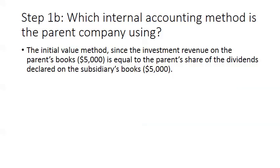We take the two undervalued items and allocate them over their useful lives to get annual amortization: $10,000 for royalty agreements and $5,000 for trademarks, for a total amortization of $15,000 per year. Step 1b is to determine which internal accounting method the parent is using. The investment revenue account on the parent's books is $5,000, which equals exactly the parent's share of dividends declared — so they are using the initial value method, which only reports investment revenue as dividends received.